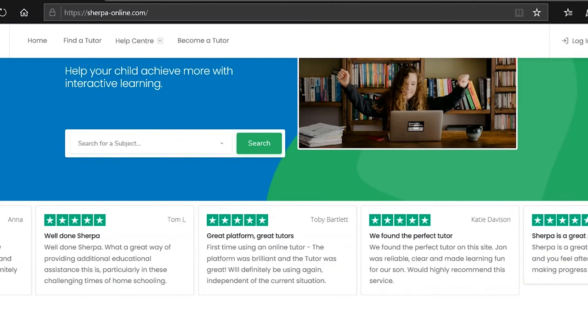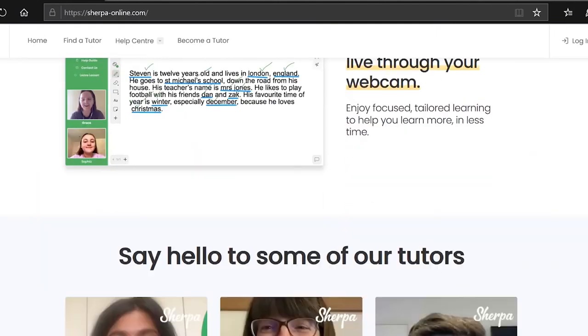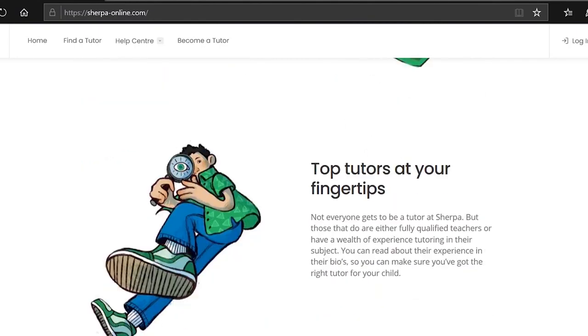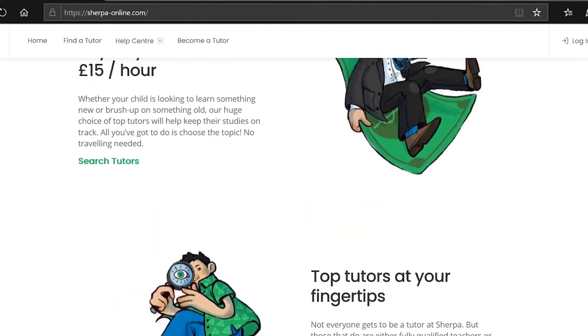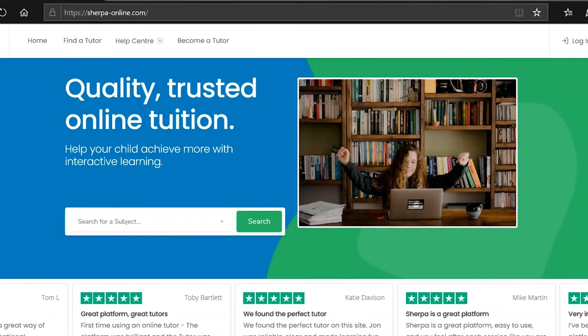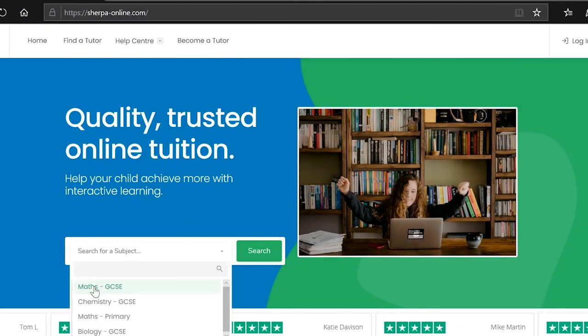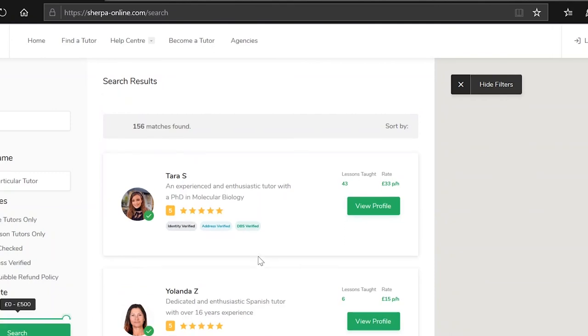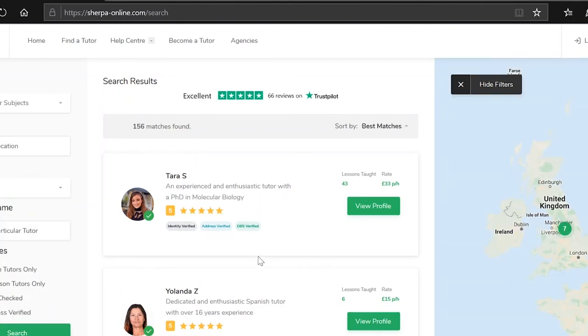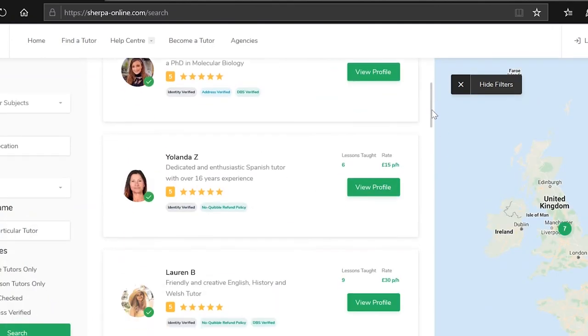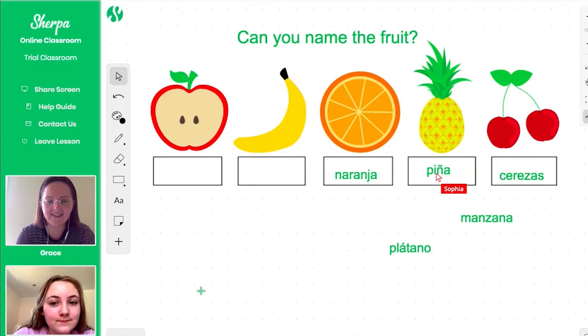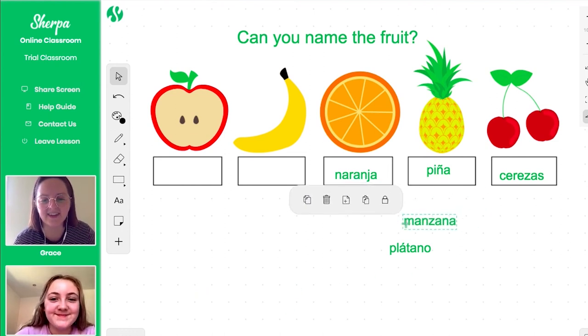That's all we have time for with today's video. But as always, if you want to learn more, visit sherpa-online.com, the only place you should be going to find your own personal tutor to help you get ahead of your studies. You can pick from a whole range of tutors and see what others have to say about them. And then when you've found the right tutor for you, you can use the Sherpa Online Classroom, which we used today, to have online lessons with your tutors where you can speak face to face no matter where you are in the world. That's sherpa-online.com. Visit it today.